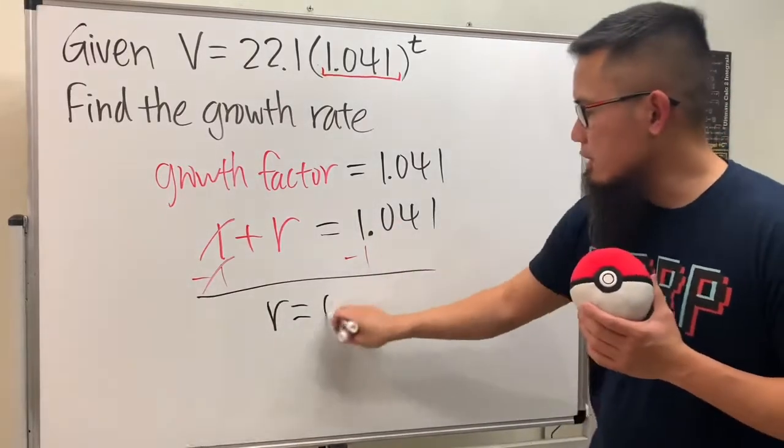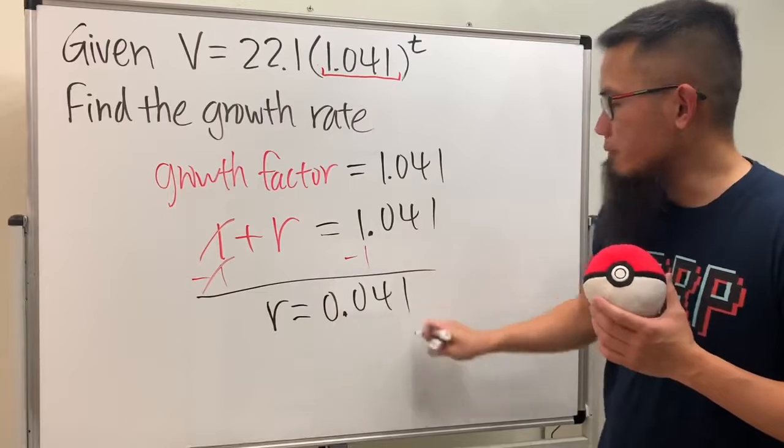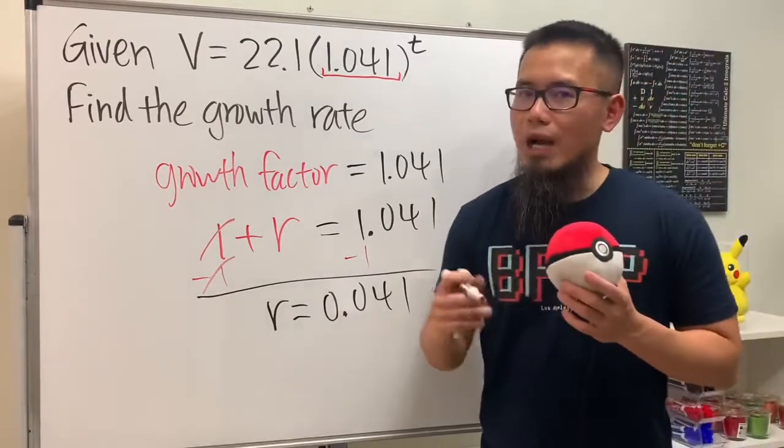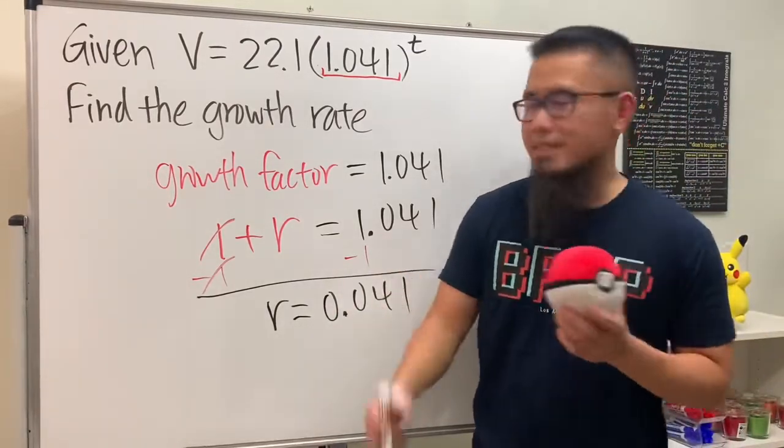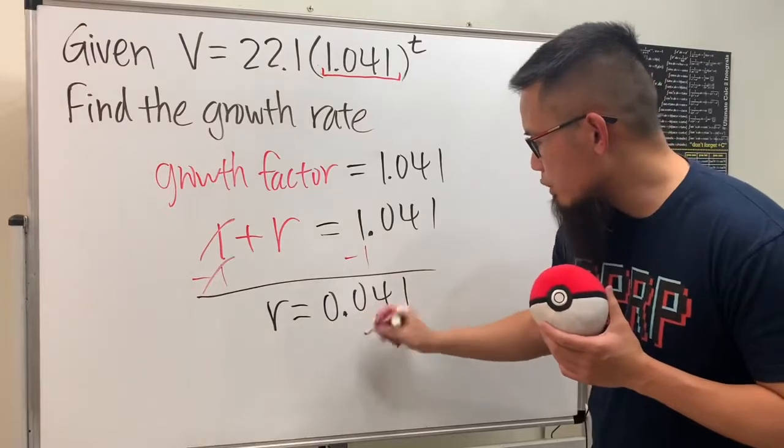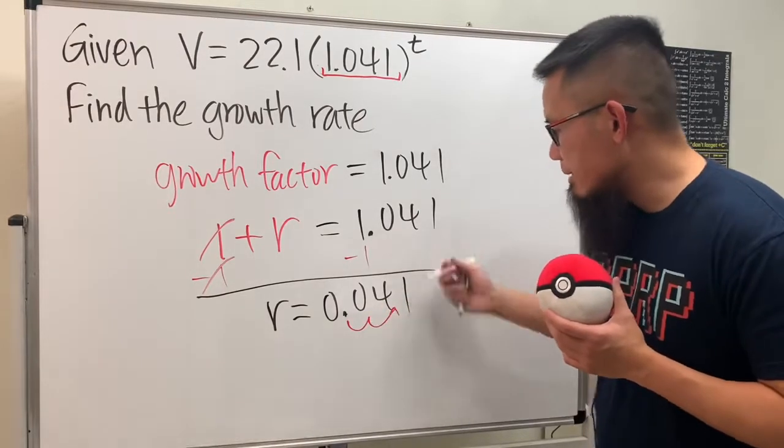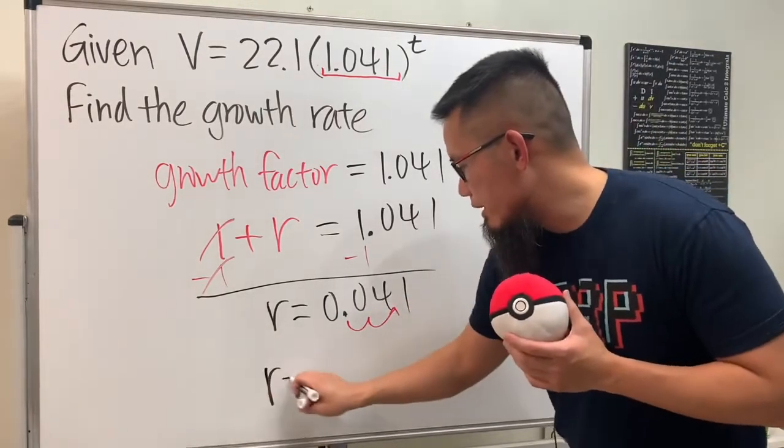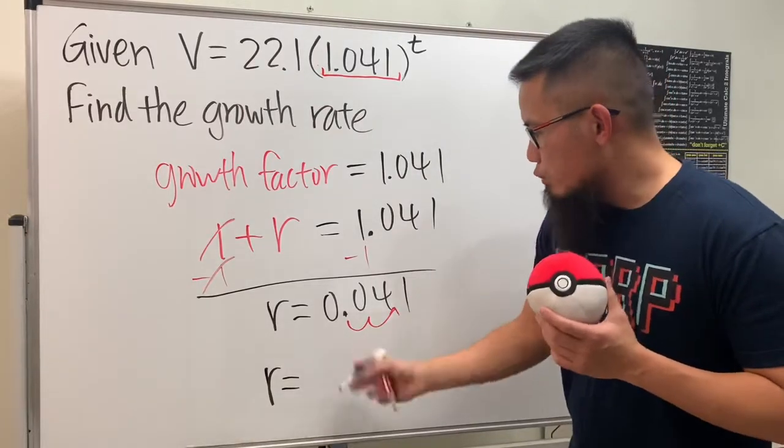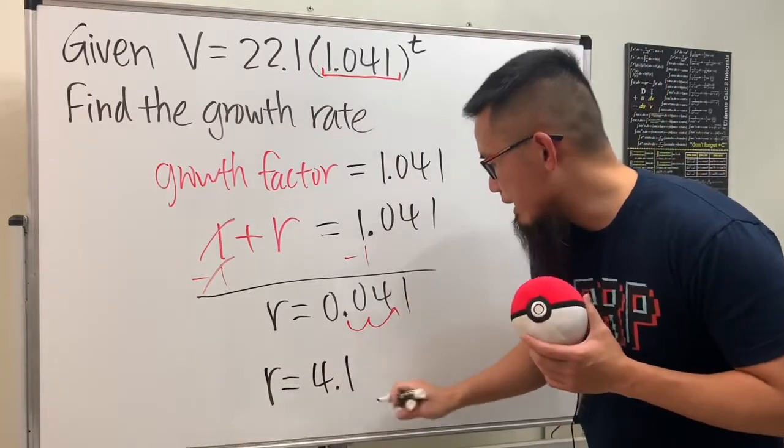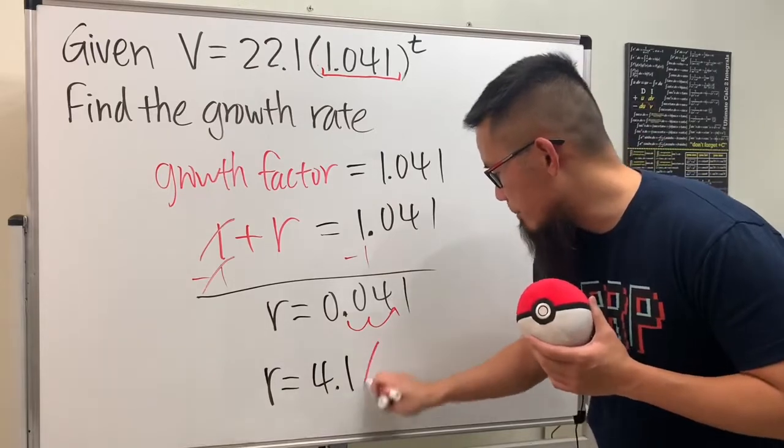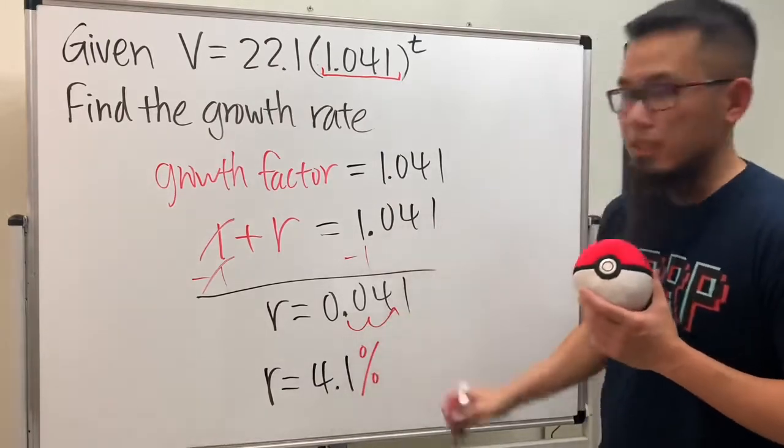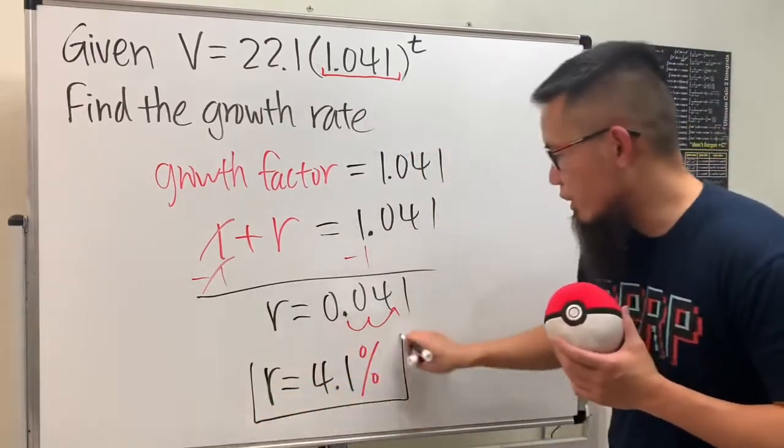being equal to 0.041. However, we should have r in terms of a percent, so we will move the decimal point twice to the right and then add the percentage symbol. So the growth rate is going to be 4.1%, and this right here is it.